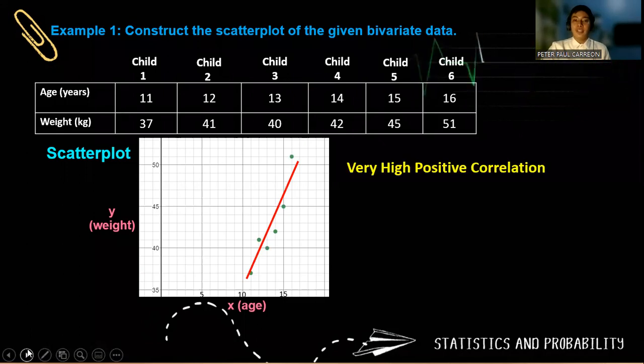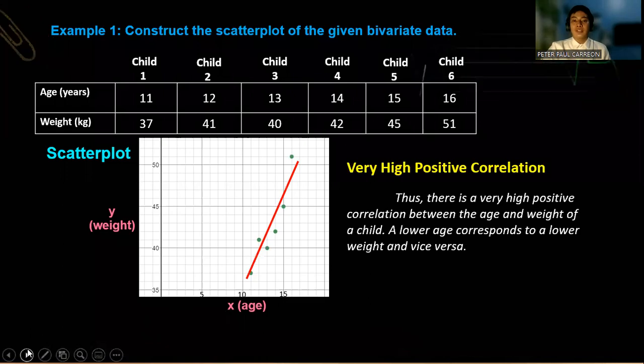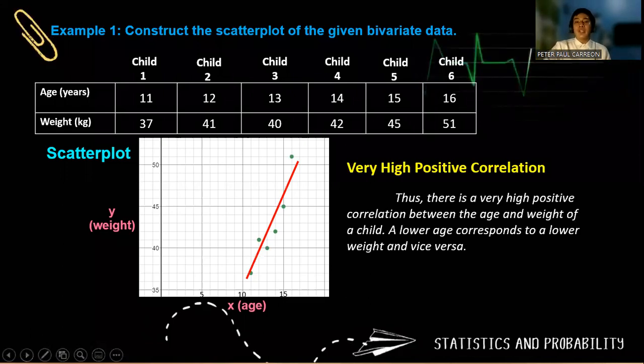And we could say that there is very high positive correlation. So thus, there is a very high positive correlation between age and weight of a child. So a lower age corresponds to a lower weight, and a higher age corresponds to a higher weight.